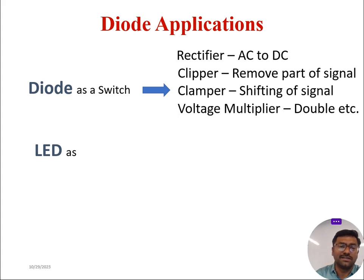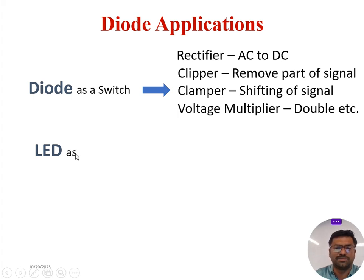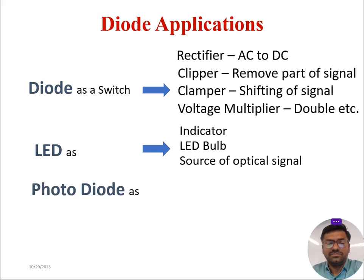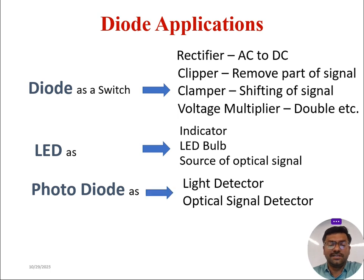Coming to other applications of diode: other than regular rectifier diodes, we can have LEDs, photodiodes, Zener diodes, tunnel diodes, and many other diodes, but the construction of all those diodes is as per the conventional rectifier diode. LEDs can be used as indicators in many applications, as LED bulbs, and as a source of optical signal for optical fiber communication. Now, what is a photodiode? It detects photons of energy, which implies it detects light energy. So we can use photodiode for the detection of light and also for optical signal detection in optical fiber communication.